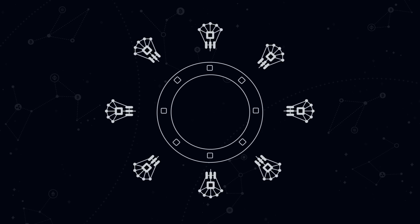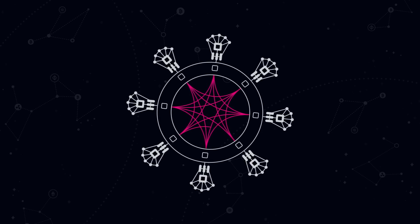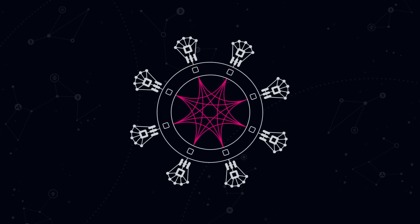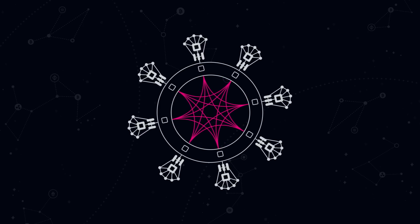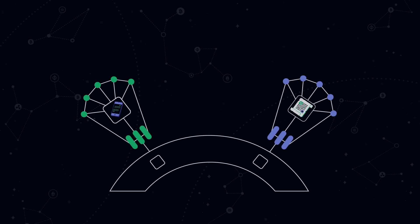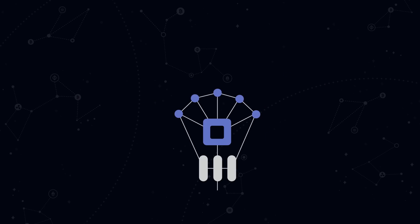Even though each parachain is autonomous, it can communicate with other parachains and, altogether, they form one big network. Parachains communicate by sending each other not only tokens but also data, which means that one parachain can easily use some of the functions of another and vice versa.